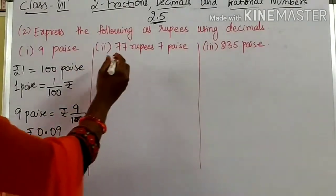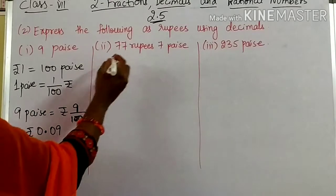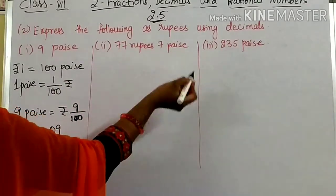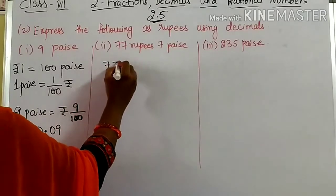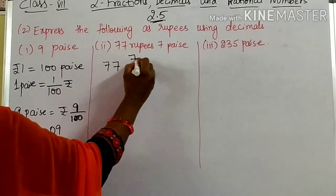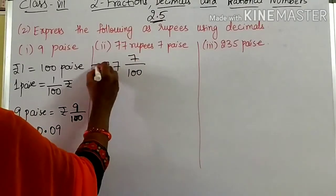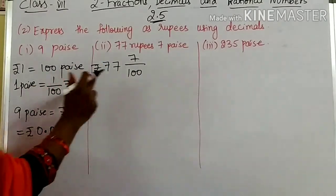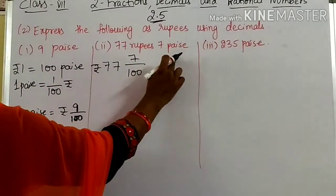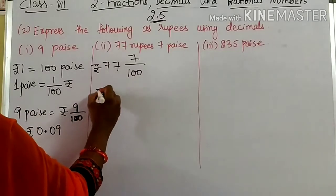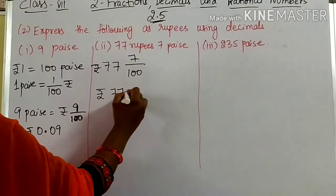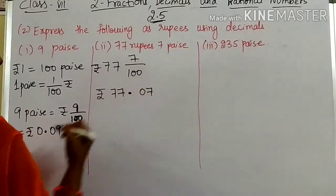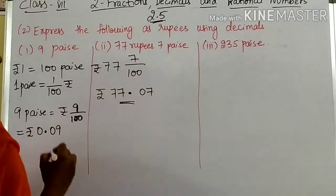Coming to 77 rupees 7 paise. Here, 77 is in rupees. We have to convert the paise into rupees. So 77 as it is, you write. And you write 7 paise as 7/100, because 1 paise is 1/100 rupee. Similarly, 7 paise is 7/100. Now, 77 is the whole part. 7/100 gives you 0.07. So the answer is rupees 77.07.